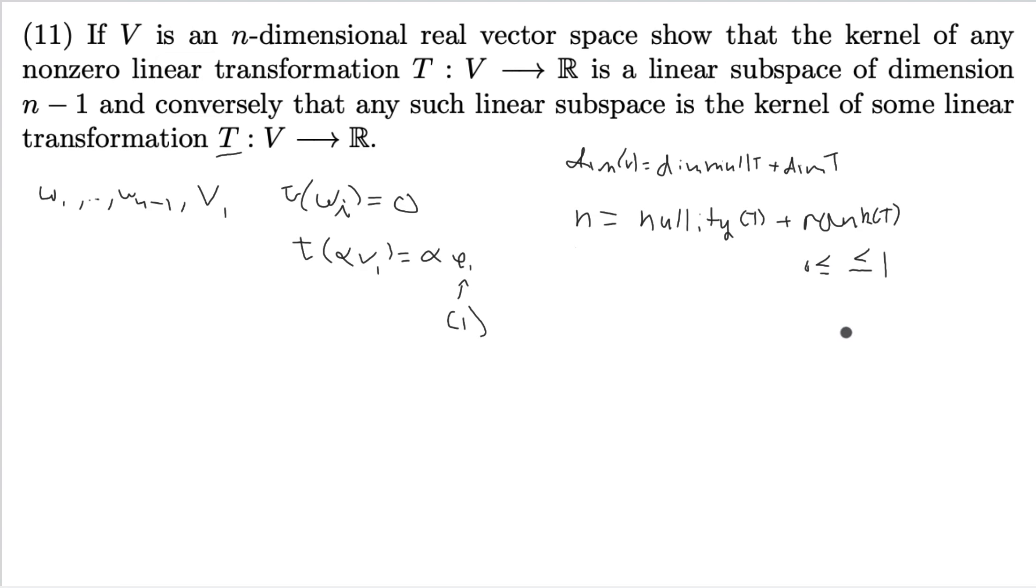Next, we'll note the rank of T is less than or equal to 1, but greater than or equal to 0. This is because the output space is only one dimensional, and the image of a space cannot be larger than the space itself. Therefore, let's check these two cases. Clearly, rank of T is equal to 0 or 1. If the rank of T is 0, then that means that the image of T is simply the 0 vector, but that means that T is the 0 map. And we've excluded that case already.